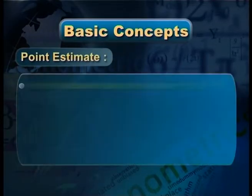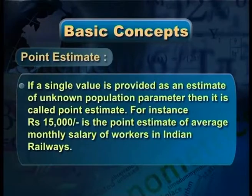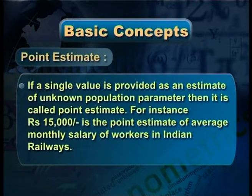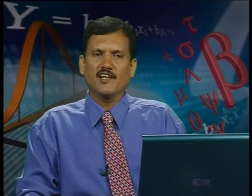Point estimate: if a single value is provided as an estimate of an unknown population parameter, then it is called a point estimate. For instance, rupees 15,000 is the point estimate of the average monthly salary of workers in Indian railways. Here we are saying only one particular estimate — one single value — that is called point estimate.